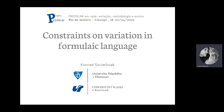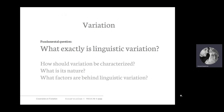My focus today will be on constraints and variation in formulaic language. I want to start by asking one big fundamental question: what exactly is linguistic variation? It's a deep philosophical question, and I don't have a fully satisfactory answer to it, probably because there are more than one answer, and there are more than one factors responsible for linguistic variation.